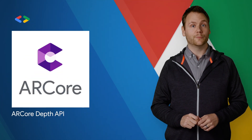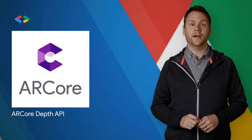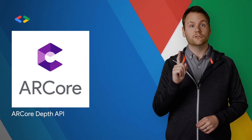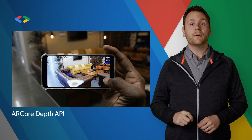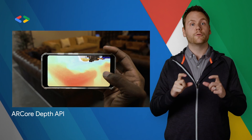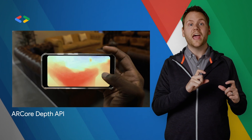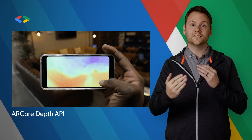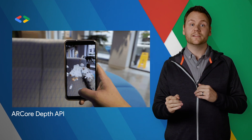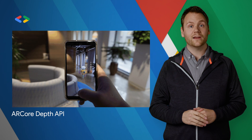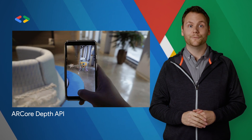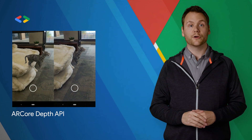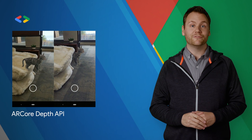For mobile developers, the new ARCore Depth API allows developers to create a depth map using a single RGB camera. The depth map is created by taking multiple images from different angles and comparing them as you move your phone to estimate the distance to every pixel, enabling experiences that are vastly more natural, interactive, and helpful. If you're interested in trying the new Depth API, please fill out our Call for Collaborators form, which you can find on the post.